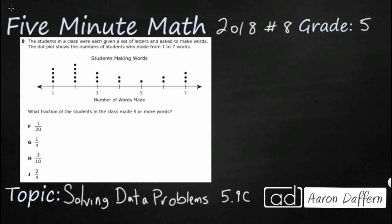So the students in the class were given each a set of numbers and letters and asked to make words, and then the dot plot shows the number of students who made from 1 to 7 words. We have some missing gaps here. Let's just go ahead and fill those in.